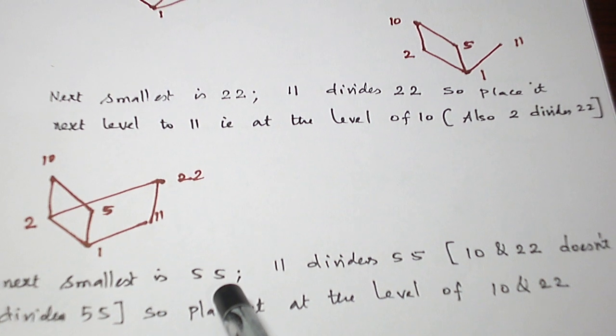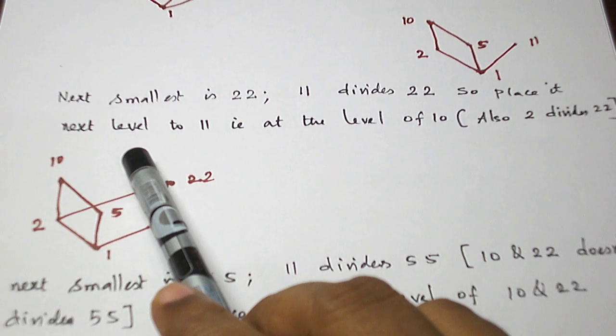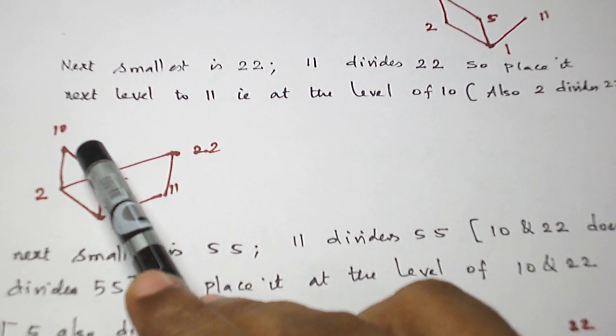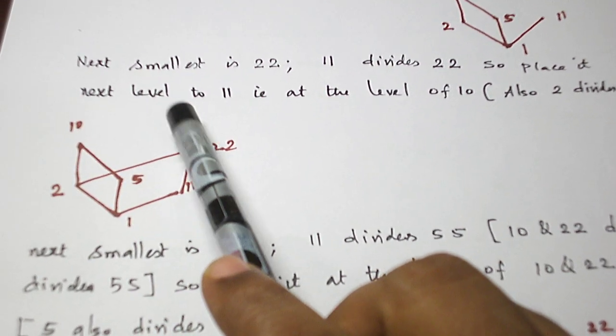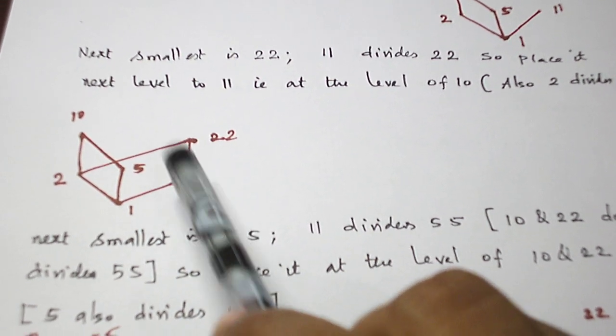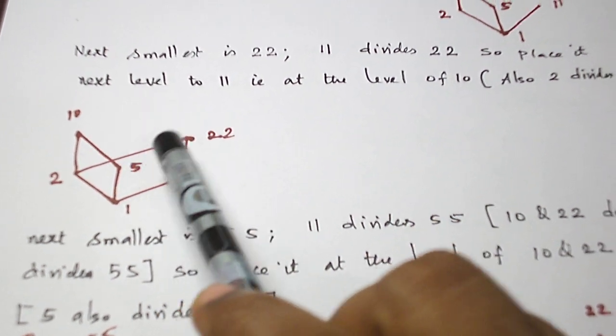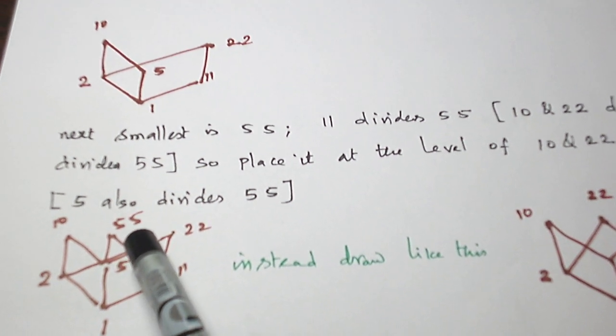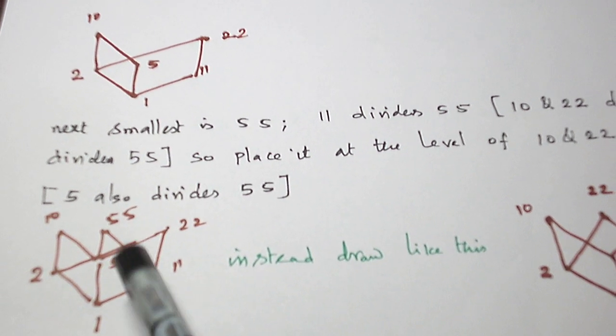Next smallest element is 55. And 22 does not divide 55. 10 does not divide 55, so it cannot be placed in a higher level than 10 and 22. So it has to be placed in the same level of 55. 5 divides 55 and 11 divides 55, so level greater than 5 and 11 but in the same level of 10 and 22. So 55 is placed here and these two are joined.